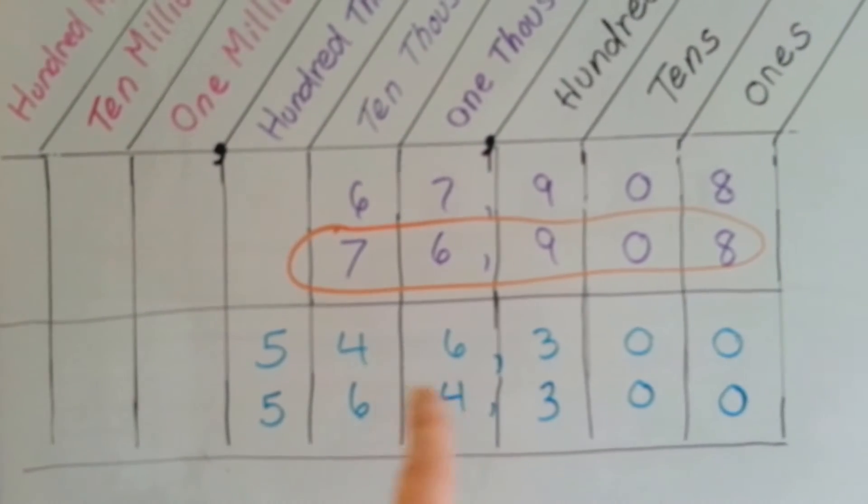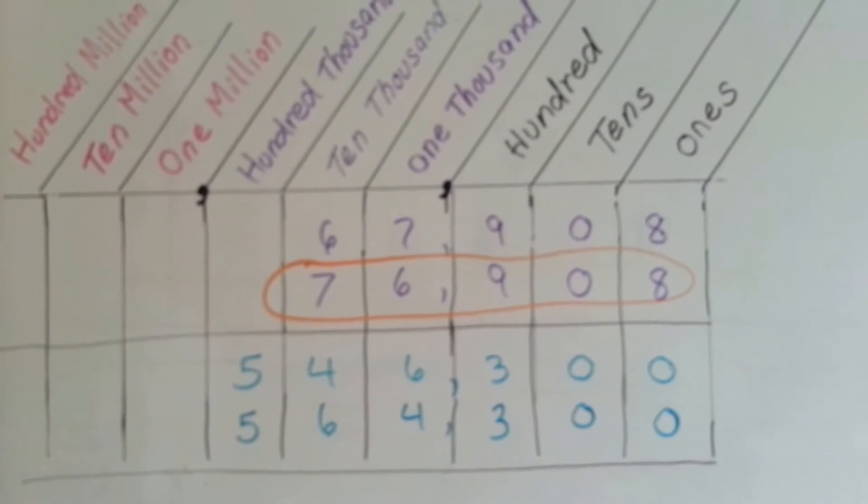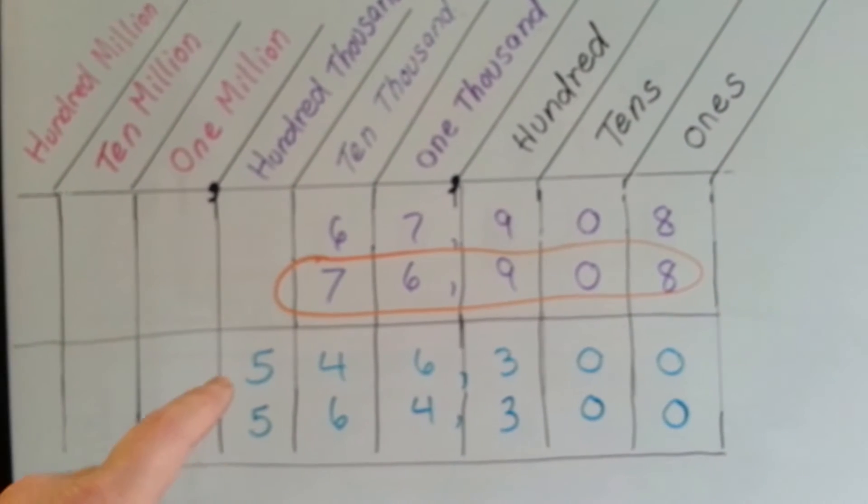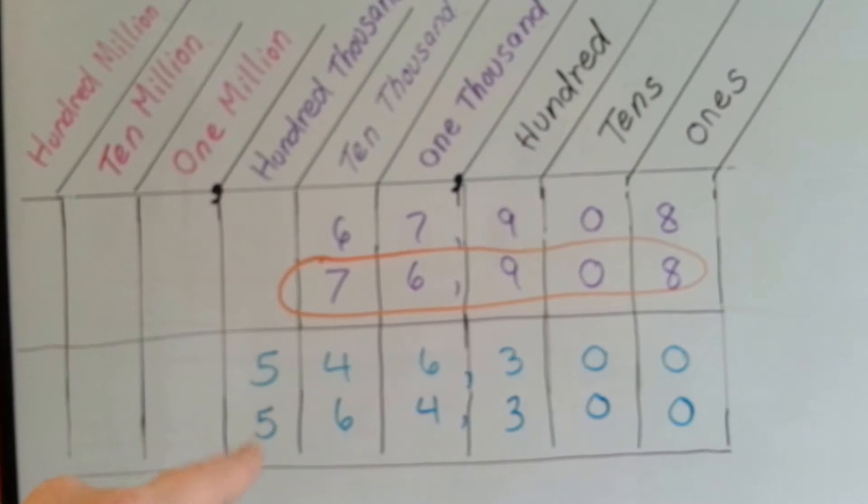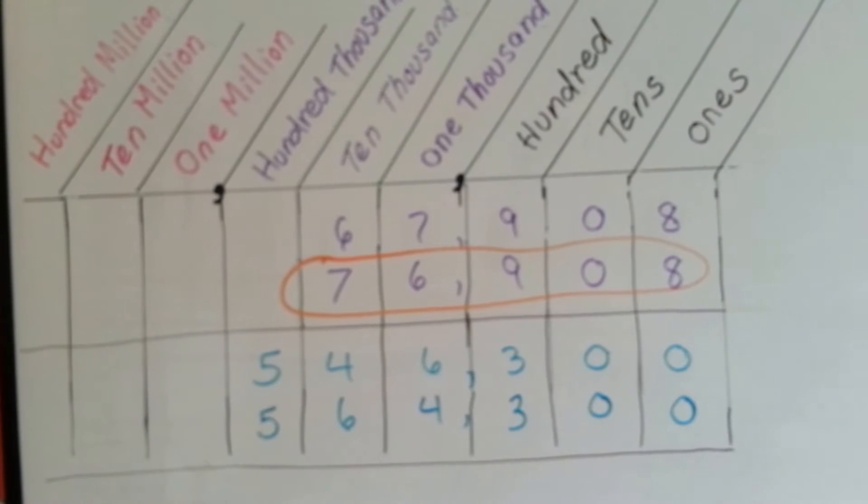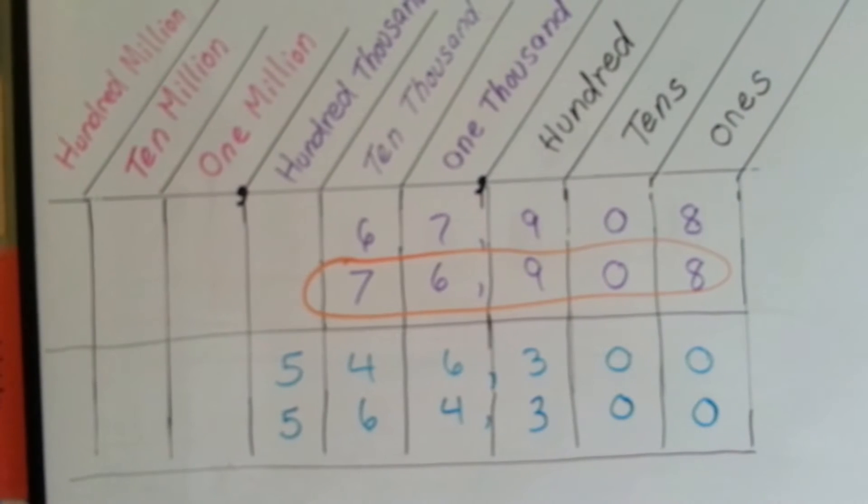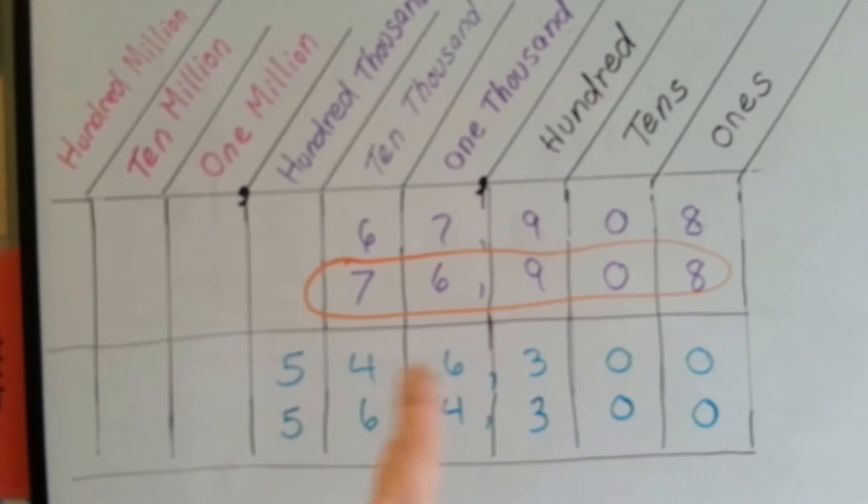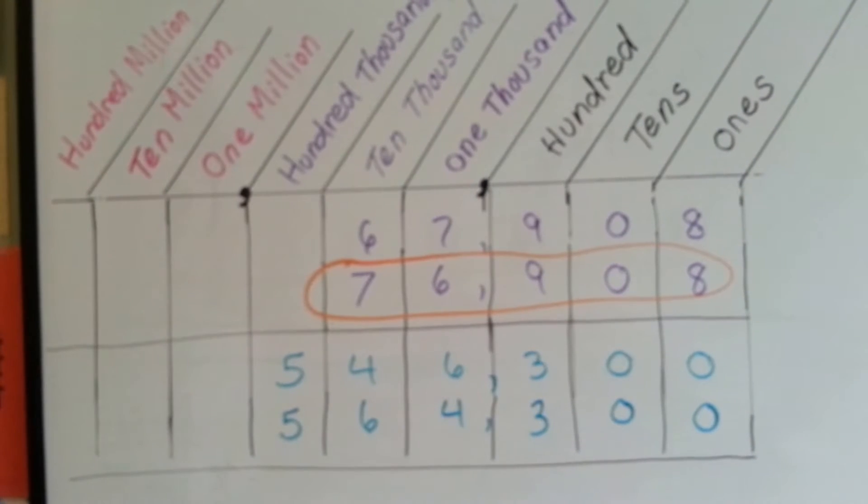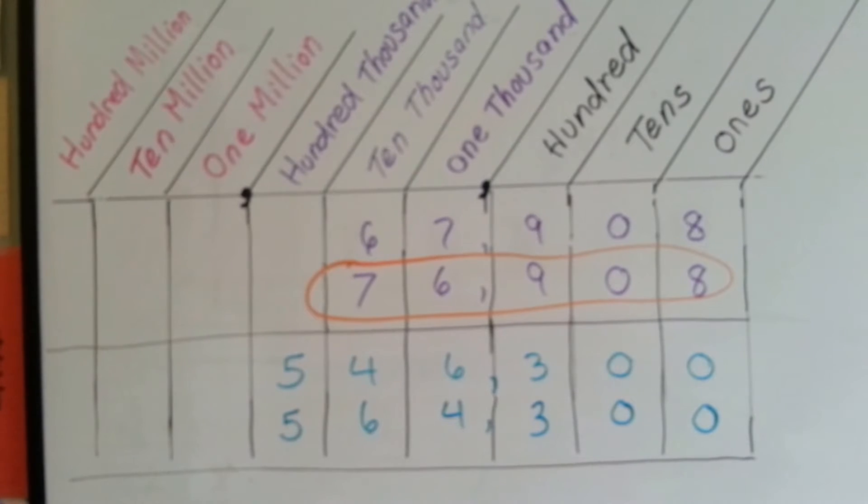Now what about these two numbers here in the blue? Which one's bigger? They both have 5's in the 100,000th place. They both have 300's, 010's, and 01's. Right here is the only place where it's different in the 10,000th and 1,000th. So which one's bigger?